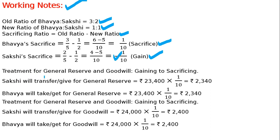Treatment for general reserve and goodwill: it is gaining to sacrificing. The gaining partner's capital account will be debited and the sacrificing partner's capital account will be credited. Sakhi's capital account — gaining share — 23,400 multiplied by 1/10, equals 2,340. Likewise, Bhavya will receive for general reserve: 23,400 into 1/10, which is 2,340. Same treatment for general reserve and goodwill — gaining to sacrificing.